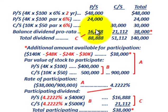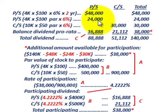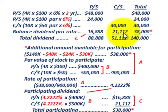Looking at the final chart, the pro-rata balanced dividend gave $16,888 to preferred stock and $21,112 to common stock for participation, totaling $38,000 allocated. Summing all totals: preferred stock gets $48,000 plus $24,000 plus $16,888 for a total dividend of $88,888. Common stock gets $30,000 plus $21,112 for a total of $51,112. Adding those together gives the grand total of $140,000 in dividends paid out.